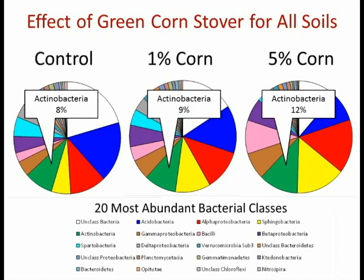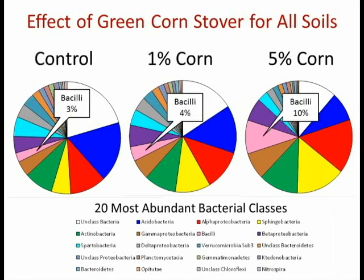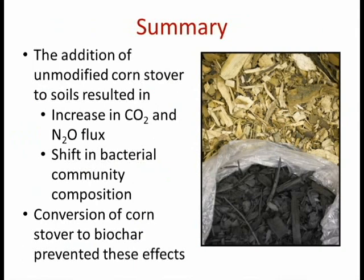To summarize the results: the addition of the unmodified green corn stover resulted in an increase in flux of carbon dioxide and nitrous oxide — an increase in greenhouse gas emissions — and a significant shift in the composition of the bacterial communities. When we put in the unmodified plant material, there's a burst in activity and a change in community composition. But for the gasified and pyrolyzed biochars — those stabilized materials — we don't see the increase in greenhouse gas flux and we don't see the shifts in community composition in these 60-day laboratory incubations. From the point of view of greenhouse gas emissions and carbon sequestration, this is good news: we're not getting this increase in greenhouse gas flux from the addition of these biochars.